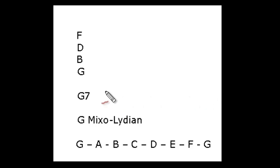If we have a look at the G7 chord and we have a look at the notes in the G7 chord, I have them here as a vertical structure: G, B, D and F.